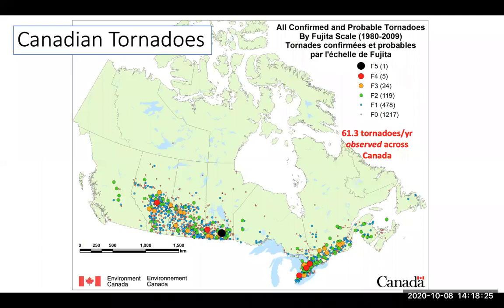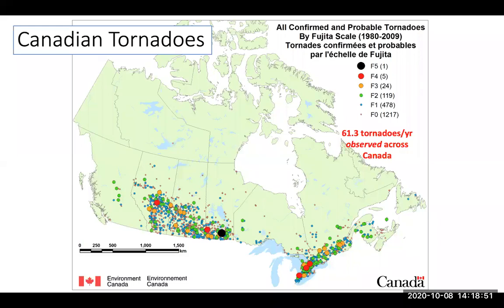This is a map of tornado occurrence in Canada. Canada has about 60 tornadoes per year. The University of Western Ontario is down in the southeast — we've had some strong tornadoes in our region — but most of Canada's population is hovering near the US border. So this map of tornado occurrence actually looks a lot like our map of population density.